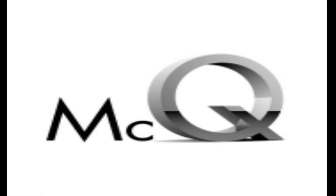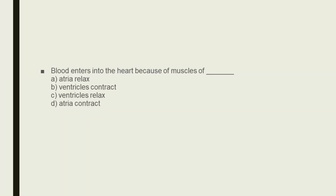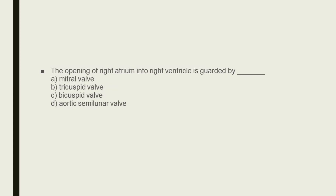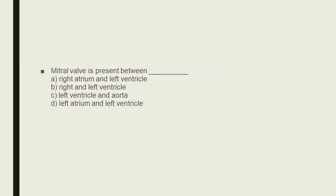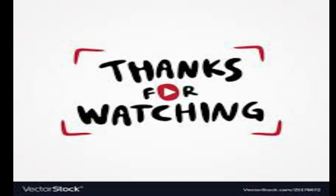Finally, here are some MCQs related to the anatomy of the heart: Which of the following has the thickest wall? Blood enters the heart because of the muscles of — ? The opening of the right atrium into the right ventricle is guarded by — ? The mitral valve is present between — ? And: identify the correct sequence of blood flow through the chambers of the heart. Thanks for watching.